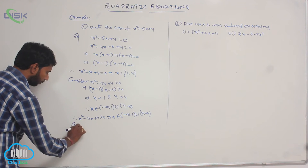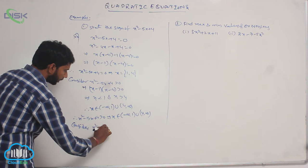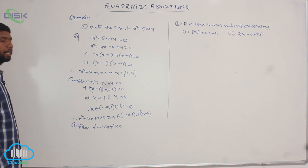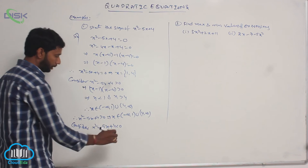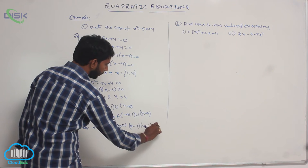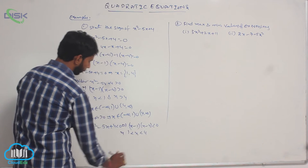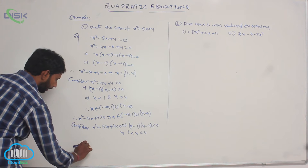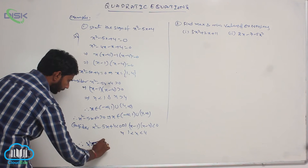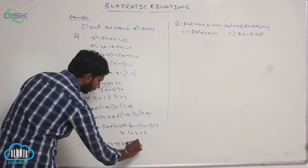Next, find which interval is negative. Consider x² - 5x + 4 < 0, that implies (x - 1)(x - 4) < 0, which gives 1 < x < 4. Therefore the expression is negative when x belongs to the open interval (1, 4).